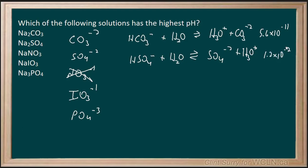Iodate is found up higher at HIO3 plus H2O giving us H3O plus and IO3 minus at 1.7 times 10 to the minus one.